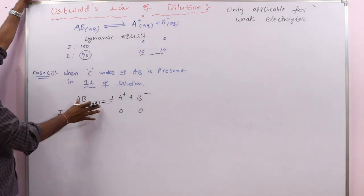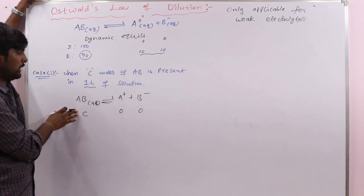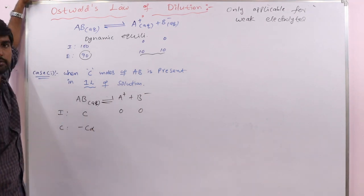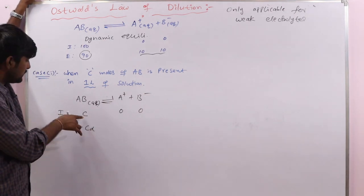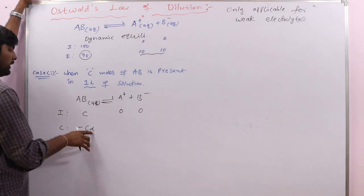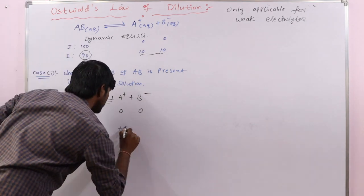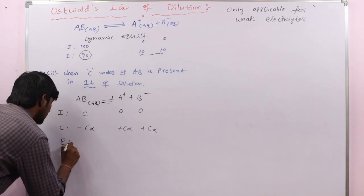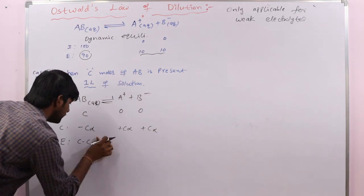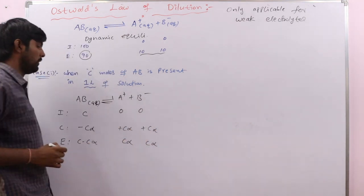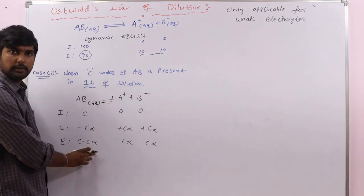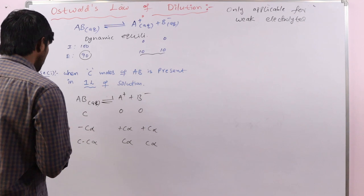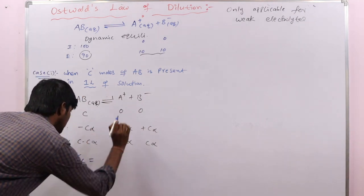Suppose Cα molecules undergo dissociation, where alpha is the degree of ionization and C is the initial concentration of the electrolyte. Cα moles of cation and anion are formed. At equilibrium, the concentration of AB is C minus Cα, and the concentrations of A⁺ and B⁻ are both Cα. Now let us write the equilibrium constant expression for this system.